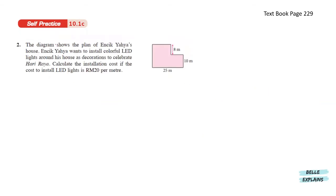Next, the diagram shows the plan of Encik Yahya's house. Encik Yahya wants to install colorful LED lights around his house as decorations to celebrate Hari Raya. Calculate the installation cost if the cost to install LED lights is RM20 per meter. Let's label the unknown parts here as A, B, and C. The sum of A and B equals to 25. And C is the sum of 8 and 10, so that gives us 18 meters.